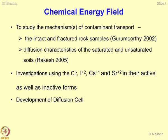This is where the chemical energy field can be utilized very well to map the properties of a porous system. To study the mechanism of contaminant transport, intact and fractured rock samples were studied by Guru Murthy, one of my PhD scholars, and diffusive characteristics of saturated and unsaturated soils were studied by Rakesh in 2005. Our investigations used fluoride ions, iodide ions, cesium and strontium in their active as well as inactive forms. Active forms are nothing but radioisotopes. This is where we developed diffusion cells — I will show you how diffusion cells are developed.